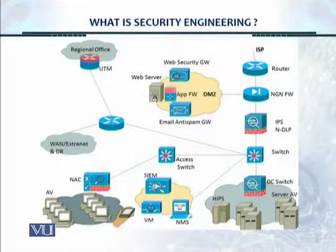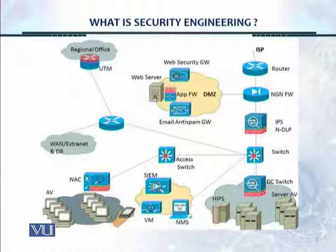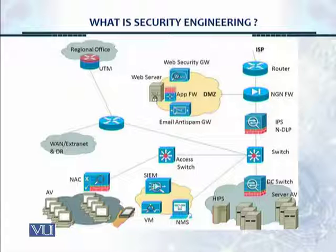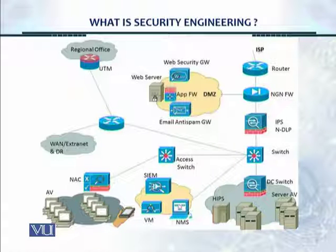In this diagram, we can see where the DMZ is placed. Coming in from the ISP, there is a router, then a next-generation firewall. Inside the firewall, there is a zone configured — one or multiple ports on the next-generation firewall with policies — and those constitute the DMZ. In this zone, we can place the web gateway, the web server, the email anti-spam gateway, and some other servers or devices. That is the overall placement of the DMZ.